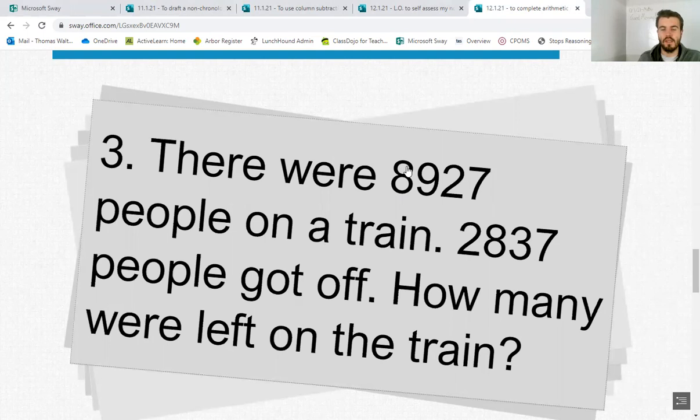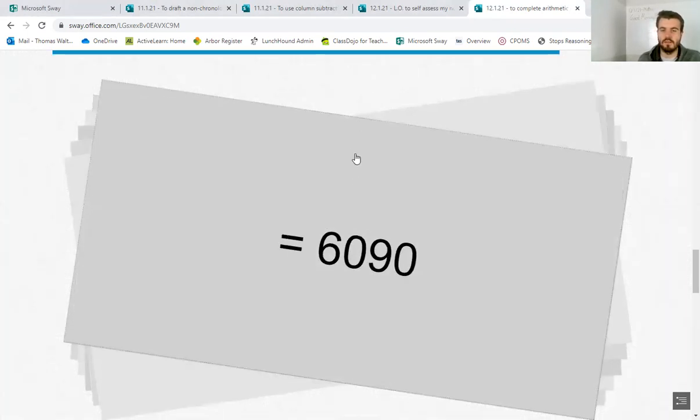Finally, there were 8,927 people on the train. 2,837 people got off. How many were left on the train? So remember put the big number, take away the small number. Pause it if you don't want to know the answer yet. The answer is 6,090.